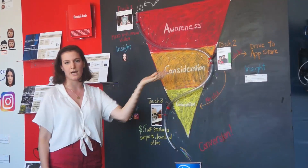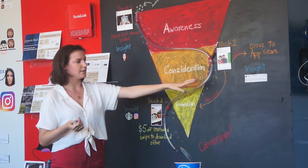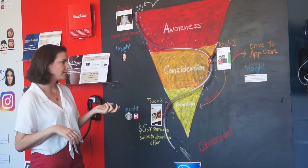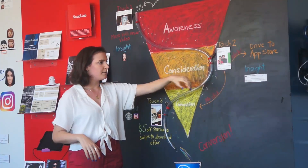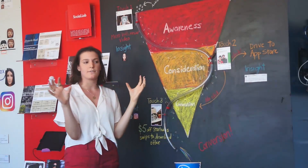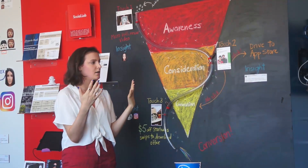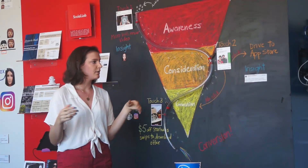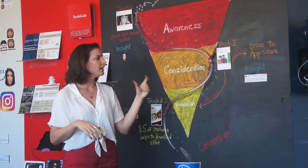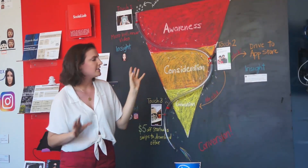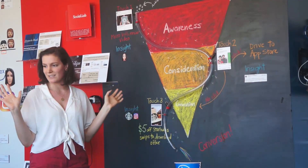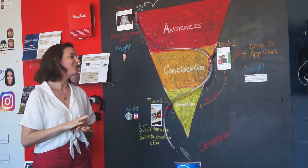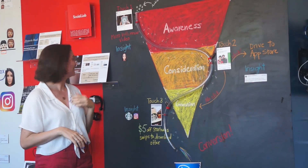So let's say they watch the video — we send them to the second part of the funnel, the consideration phase. Touch two is a carousel. That's the format we'd recommend based on the insight that people think Venmo is creepy and don't feel they have much privacy. A carousel — if you're unfamiliar — is just a series of tiles you can scroll through, where each tile can address a different pain point. It's a good way to let people seamlessly learn more about the product in one ad format. Our first tile says 'more privacy, no newsfeed,' addressing the fact that Venmo can feel a little creepy.